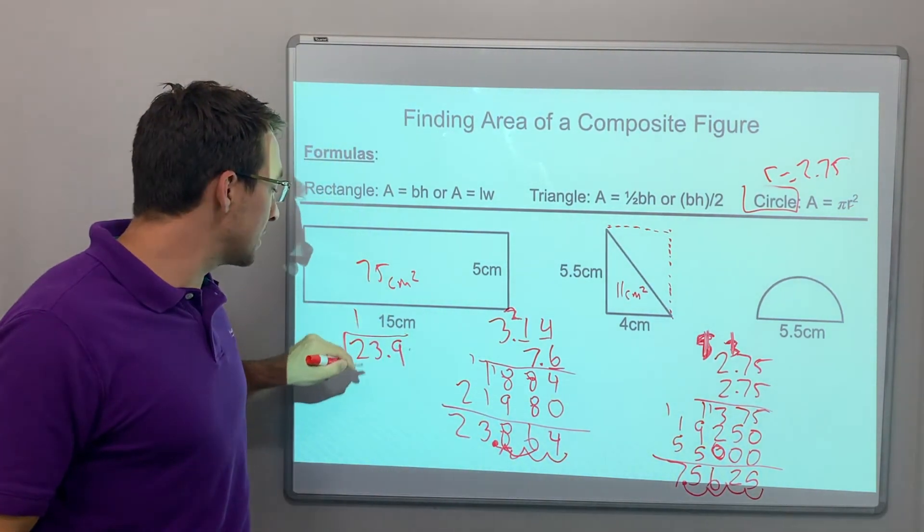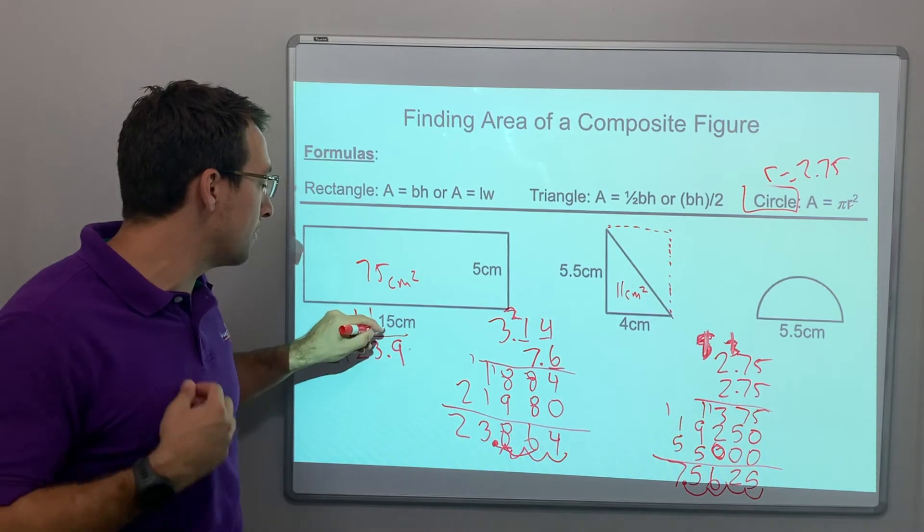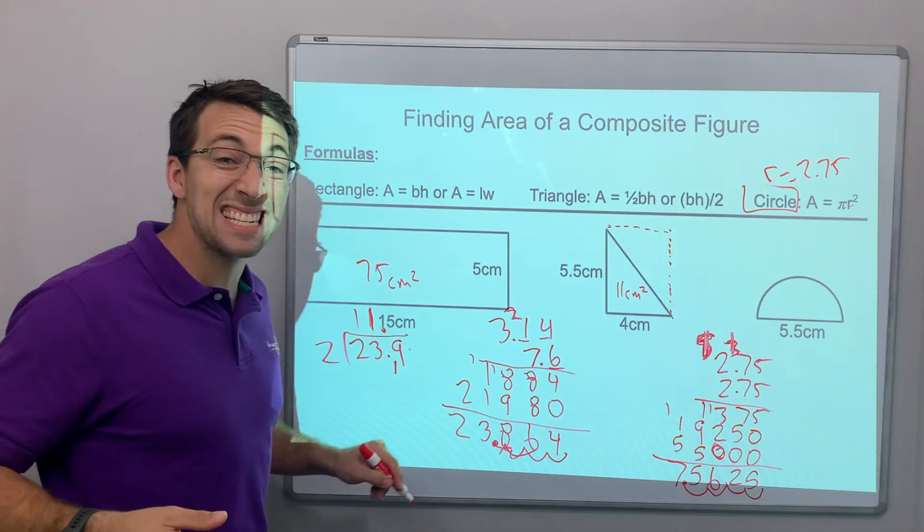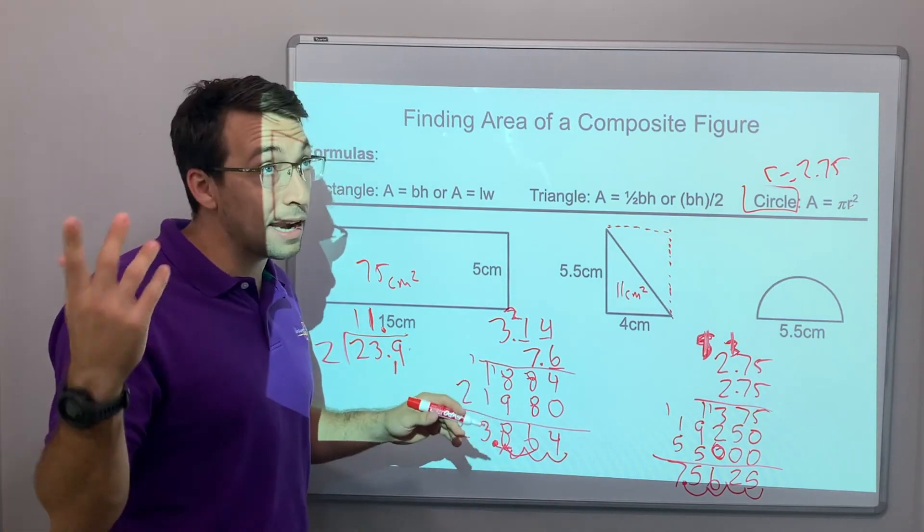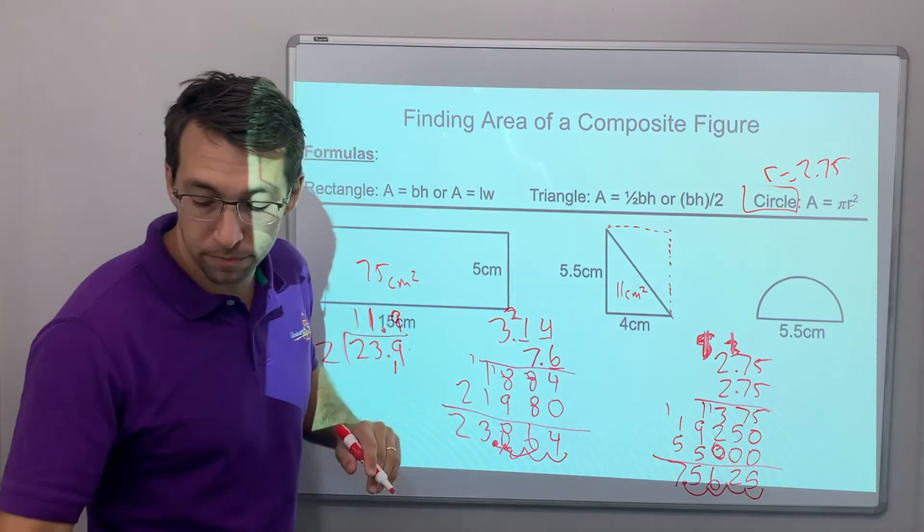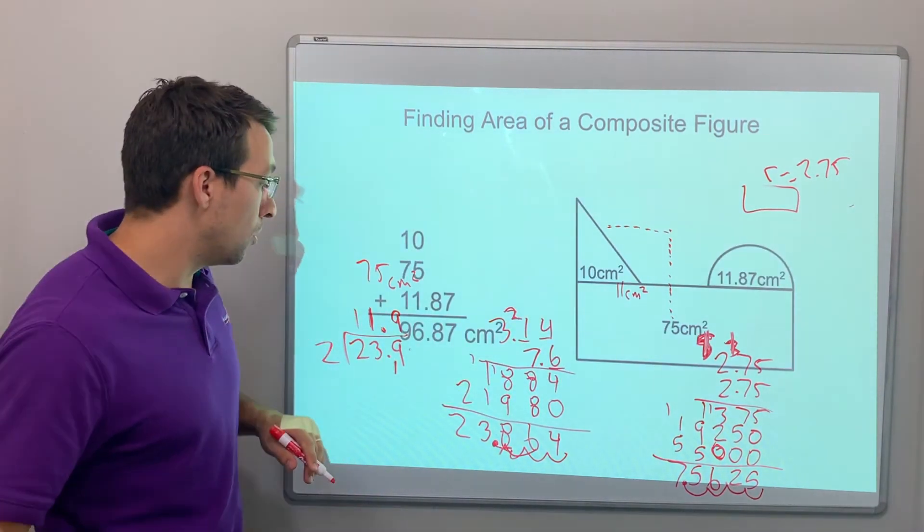2 goes into 2 one time. 2 goes into 3 one time. There's a decimal. So there's a remainder of 1. 2 goes into 19 nine times because 18, right? So check it out. Boom.